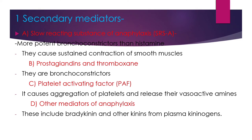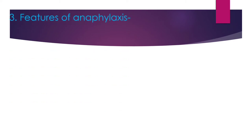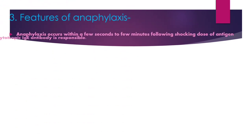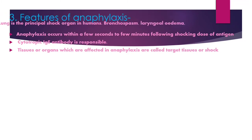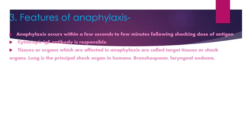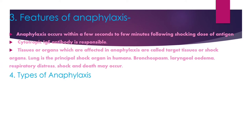Anaphylaxis occurs within a few seconds to a few minutes following the shocking dose of antigen, and cytotropic IgE antibody is responsible. The tissues or organs affected in anaphylaxis are known as target tissues or shock organs. The lung is the principal shock organ in humans, and bronchospasm, laryngeal edema, or respiratory distress — even death — may occur.